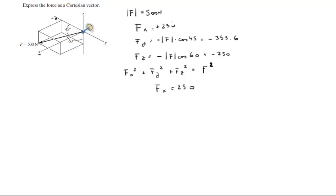So the Cartesian vector form comes out to be 250i minus 353.6j minus 250k. Final answer.